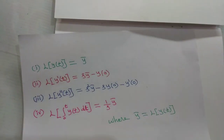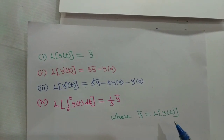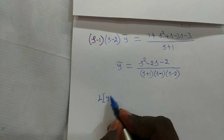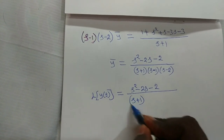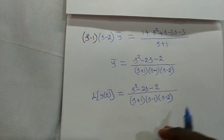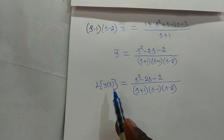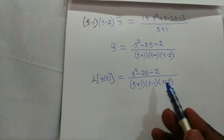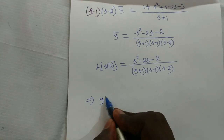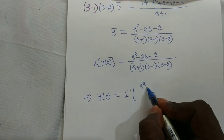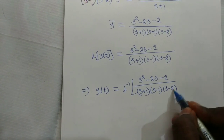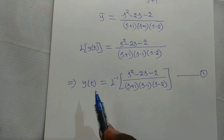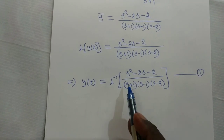Since y-bar is L{y(t)}, we substitute to get L{y(t)} equals (s² − 2s − 2) / [(s+1)(s−1)(s−2)]. To find y(t), we take the inverse Laplace transform: y(t) = L⁻¹ of (s² − 2s − 2) / [(s+1)(s−1)(s−2)]. Call this equation 1. To find the solution, we apply the partial fraction method.